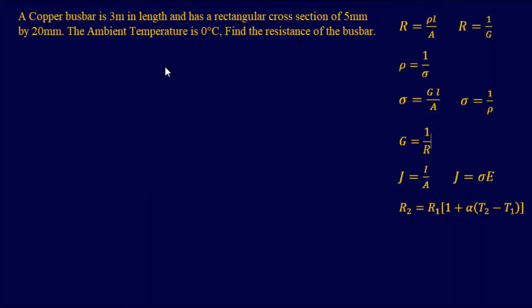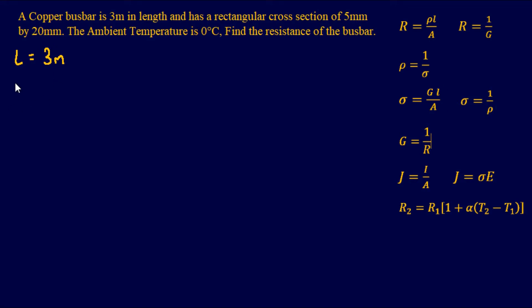Let's jump into our first problem — a relatively easy one. A copper bus bar is approximately 3 meters in length and has a rectangular cross section of 5 millimeters by 20 millimeters. The ambient temperature is 0 degrees Celsius. Find the resistance of the bus bar. Writing down what we know: the length is 3 meters, and the cross section is 5 millimeters by 20 millimeters. Let's convert that into meters.